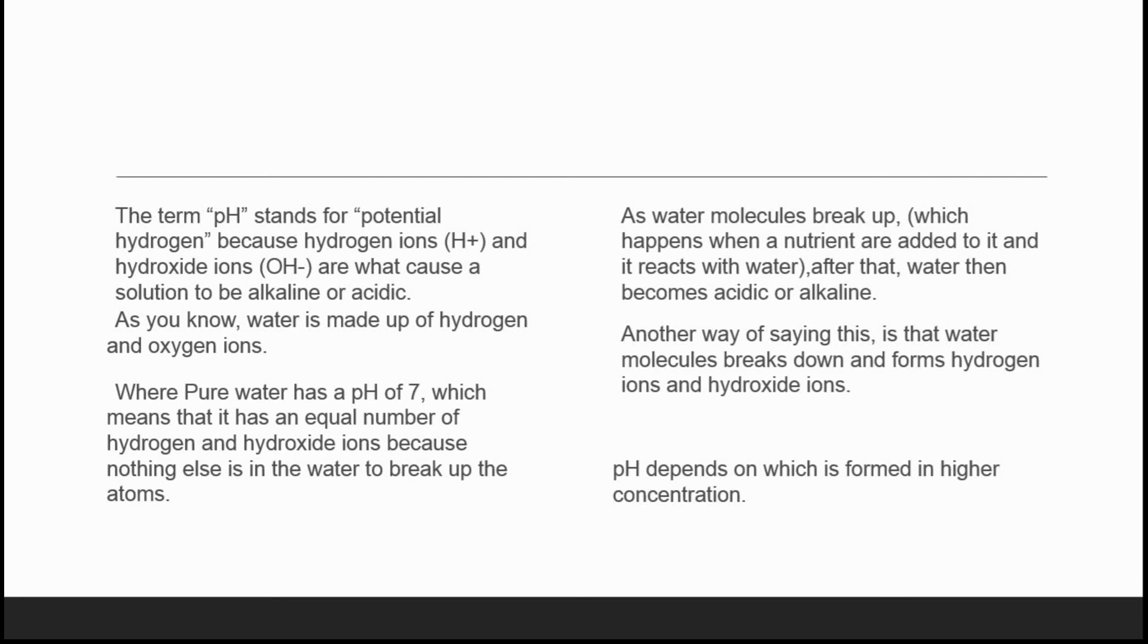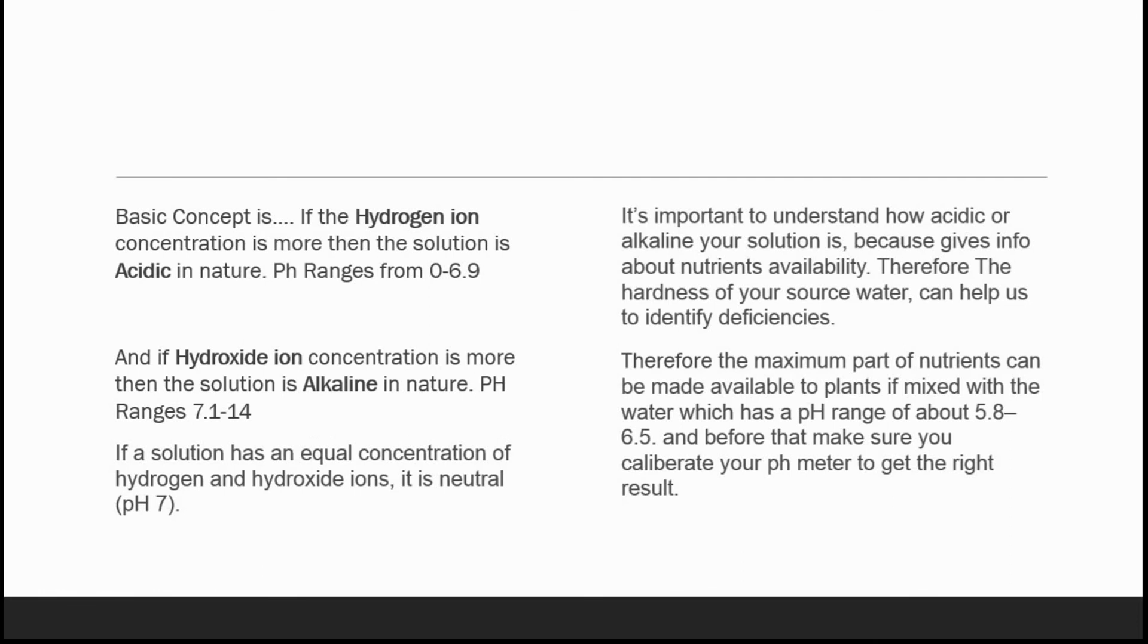We'll switch to our next slide. Basic concept is: if the hydrogen ion concentration is more, then the solution is acidic in nature and pH for acidic solution is from 0 to 6.9. And if hydroxide ions concentration is more, then the solution is alkaline in nature and the pH ranges from 7.1 to 14.